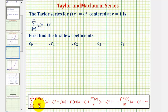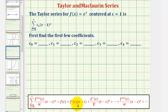Looking at the expansion of the Taylor series here on the right, notice how the first two terms are not in fraction form because when n is zero, the denominator is zero factorial, which equals one. And when n is one, one factorial is also equal to one.